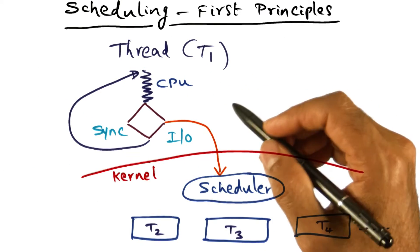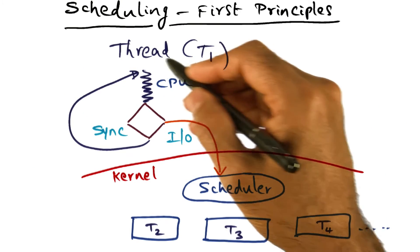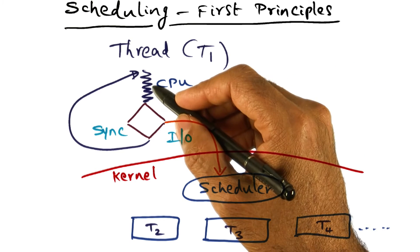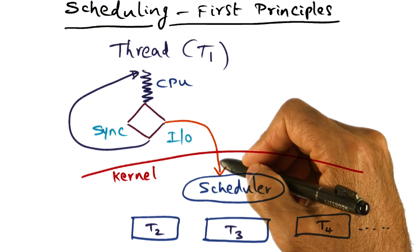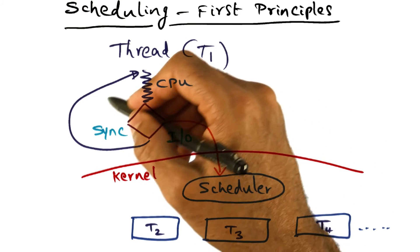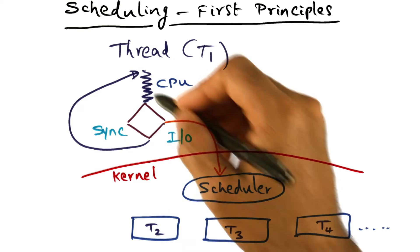Fundamentally, the typical behavior of any thread or a process running on a processor is to do the following. Compute for a while and then make a blocking I/O system call, or it might want to synchronize with other threads that it is a part of in the application.